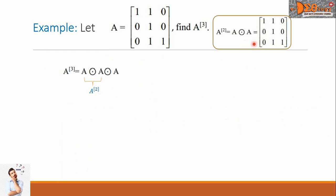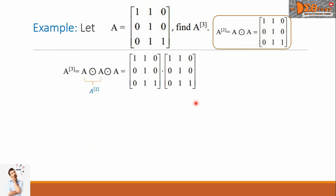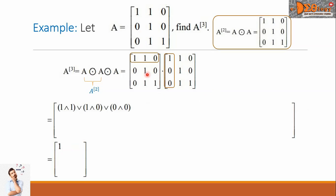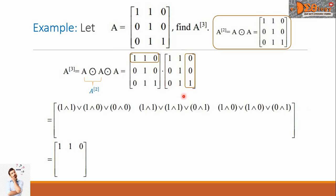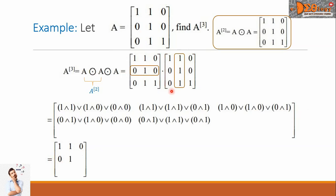This is the A power 2 matrix. So we write this matrix multiplied by matrix A. The first element is 1, multiplying the first row by the first column. The second element is 1, multiplying the first row by the second column. The third element is 0, multiplying the first row by the third column. The next element is 1, multiplying the second row by the second column. The next elements are 1, 1, 1.